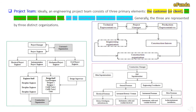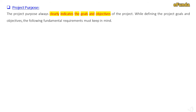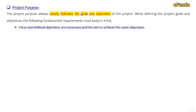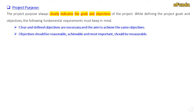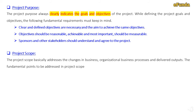Please study this in detail to understand the involvement of the respective team for each type of organization. Project purpose: the project purpose always clearly indicates the goal and objectives of the project. While defining project goals and objectives, the following fundamental requirements must be kept in mind: clear and defined objectives are necessary. Objectives should be reasonable, achievable, and most importantly measurable. Sponsors and other stakeholders should understand and agree to the project.